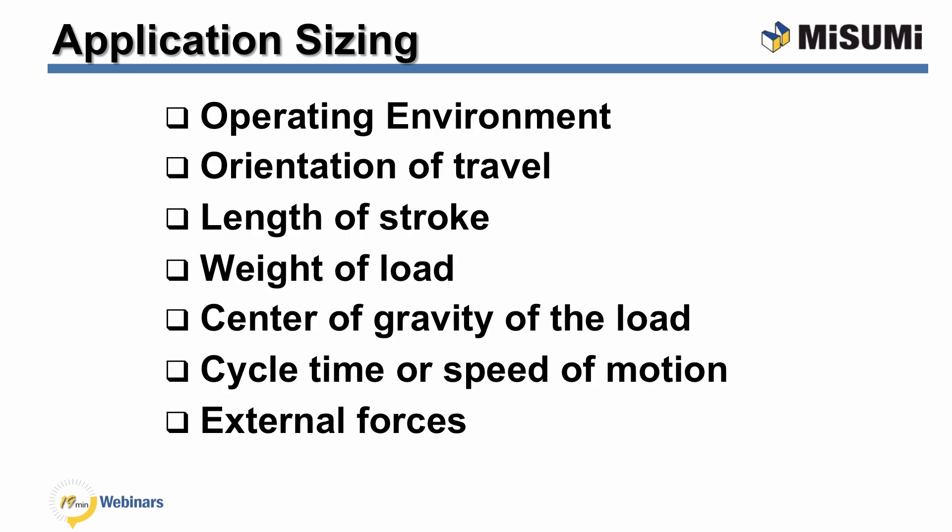Now let's look at the proper sizing and what's necessary for the application. When sizing a robot, the things you want to consider are: the operating environment, the orientation of travel, the length of stroke, what kind of weight or load will be moved and where the center of gravity of that load is located, the cycle time or speed of motion required, and any external forces that may be acting on the robot.